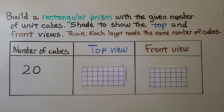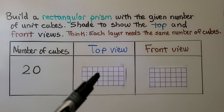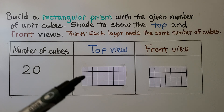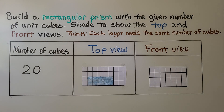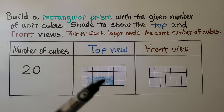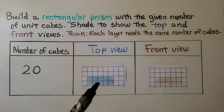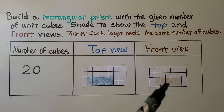Here it's telling us to build a rectangular prism with the given number of unit cubes and show the top and front views. Each layer needs the same number of cubes for it to be a rectangular prism. So how can we split up twenty so that we have the same number on each layer? We could do ten plus ten, giving us a top view of ten squares — five and five. The front view would be two layers of ten, and the top view and front view look the same.